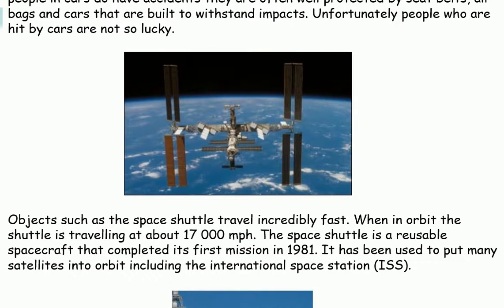Objects such as the Space Shuttle travel incredibly fast. When in orbit, the Shuttle is travelling at about 17,000 miles an hour. The Space Shuttle was a reusable spacecraft that completed its first mission in 1981. It has been used to put many satellites into orbit, including the International Space Station.